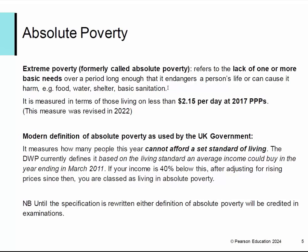However, there is some vagueness now about absolute poverty because the UK government measures it along with others — how people this year cannot afford a set standard of living. What is quite clear is that until the spec is rewritten, either definition of absolute poverty will be credited. I would stick with the one that's now called extreme poverty to mean absolute poverty — tell your students it's now called extreme poverty, but of course in the spec it's still referred to as absolute poverty.